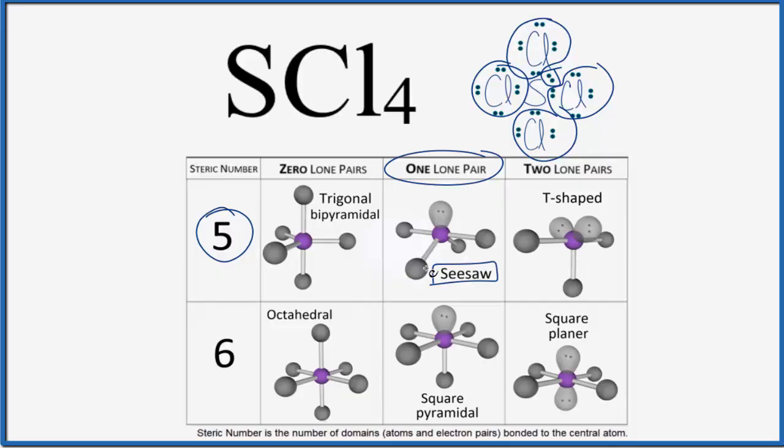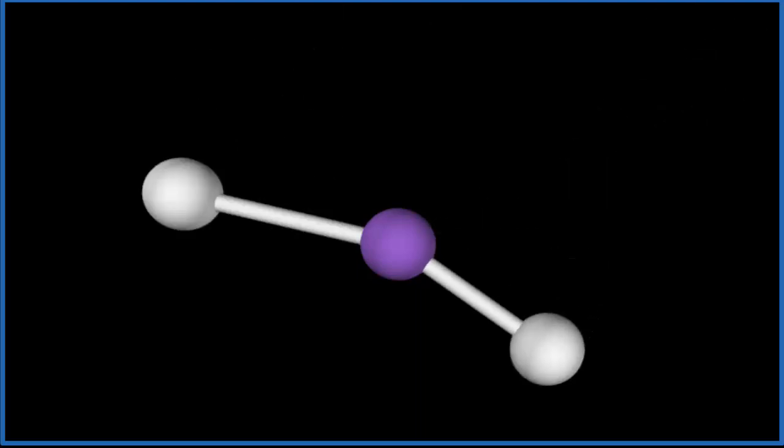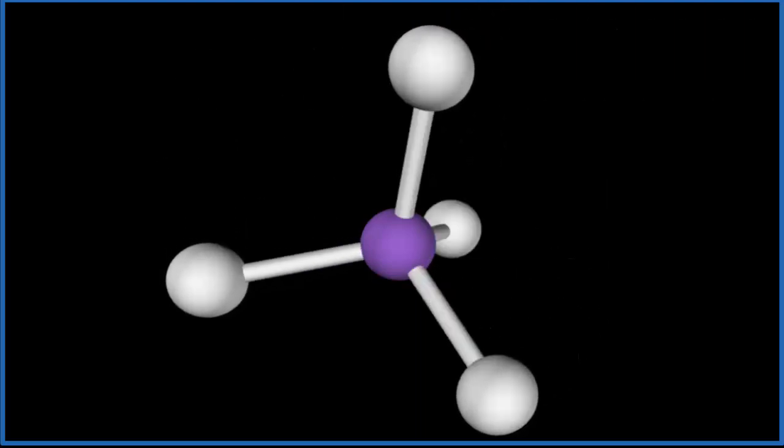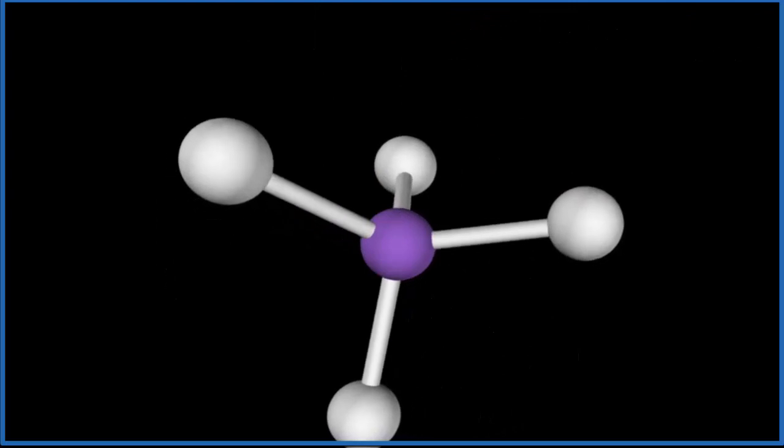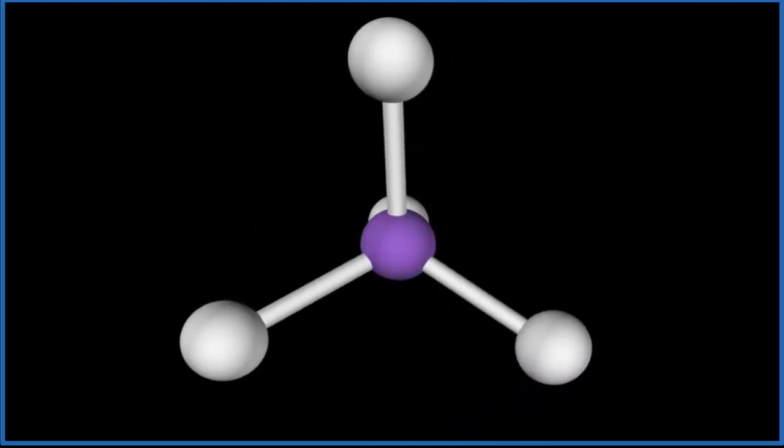Let's look at that in three dimensions. So the purple, that's the central sulfur atom. We have four of these chlorine atoms, single bonded, one, two, three. They're spreading out and they spread out to be as far away as they can from each other. We have this tetrahedral molecular geometry.